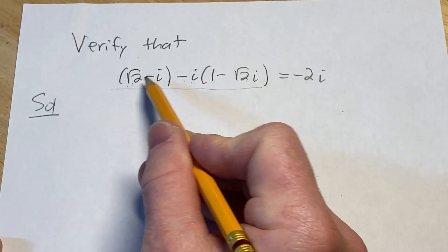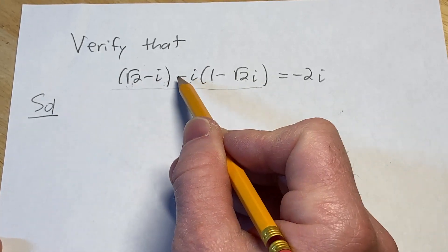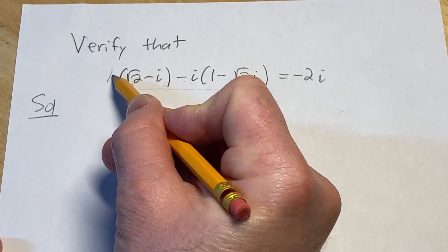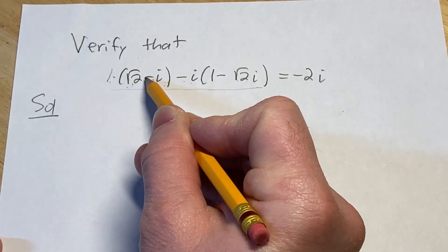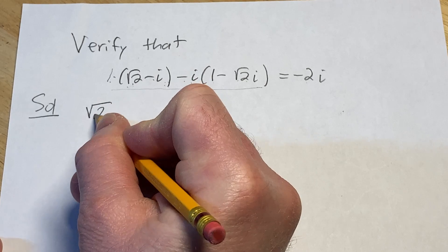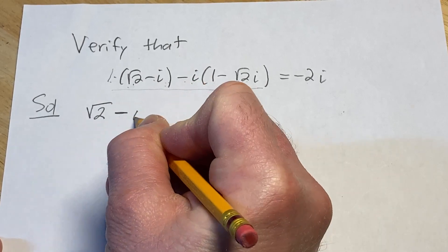I'm going to start here by removing this parentheses because you don't really need it. There's really a 1 here and when you multiply 1 times anything you just get that anything. So this is the square root of 2 minus i.